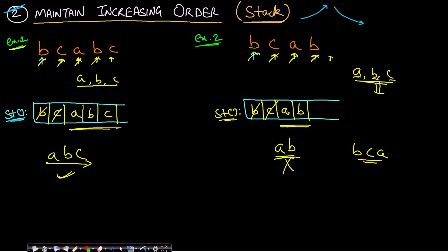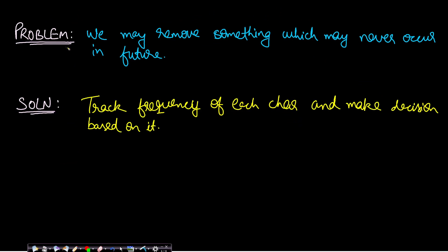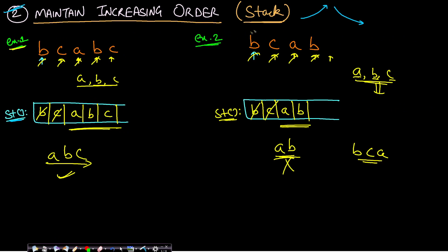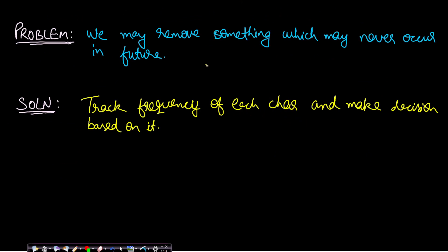What went wrong? The problem is we are just maintaining increasing order but not caring about the frequency of elements. We may remove something that will never occur again in the future. In Example 2, we removed C when we saw A, but C never occurs after that point. So we should never exclude C from the stack. To fix this, we must track the frequency of each character and make decisions based on it.